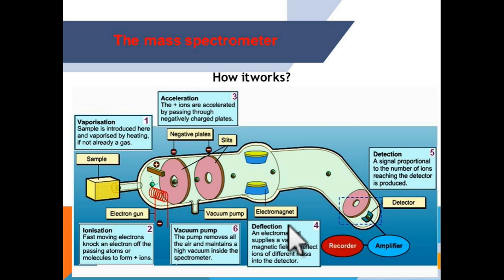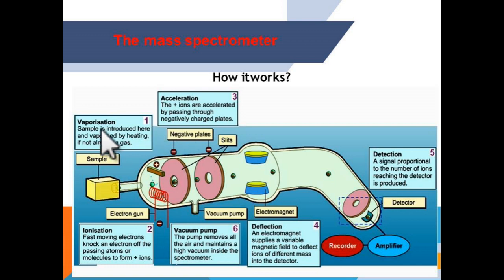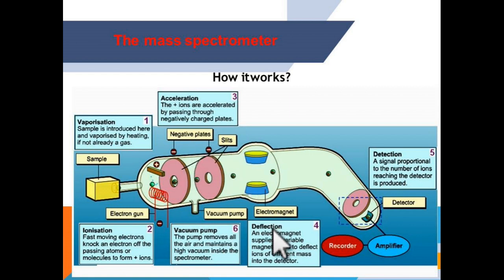This instrument has six most important sections that students must understand: the vaporizing chamber, the ionizing chamber, the acceleration chamber, the vacuum, the deflection chamber, and the detection chamber.